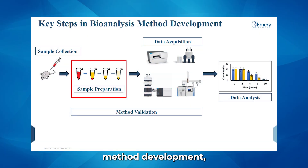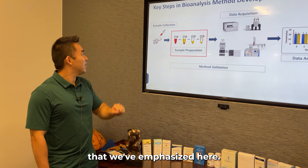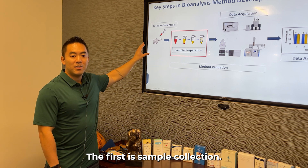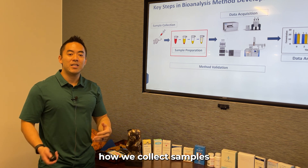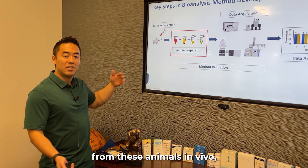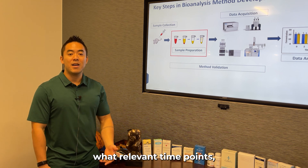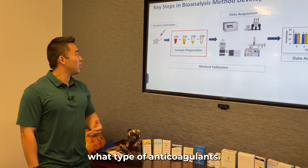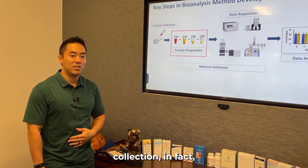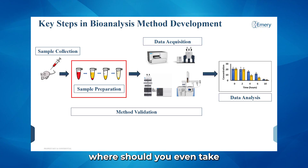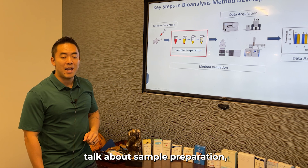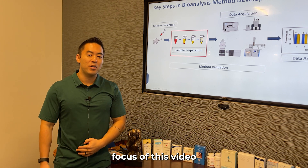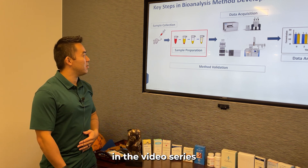When we think about bioanalysis method development there are a variety of key steps that we've emphasized here. The first is sample collection — how we collect samples from these animals in vivo, what relevant time points, how the samples should be stored, what type of anticoagulants if you're talking about blood collection, and in fact where should you even take the site for these bioanalysis samples. Following that we're going to talk about sample preparation, and that's the key focus of this video series.